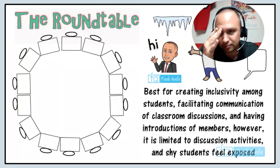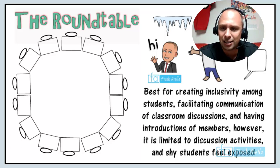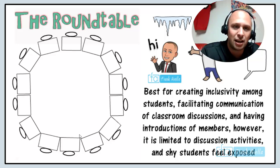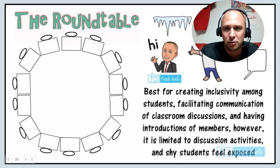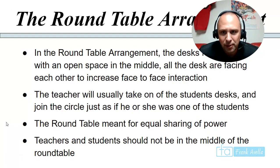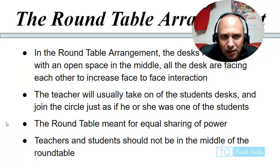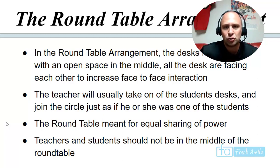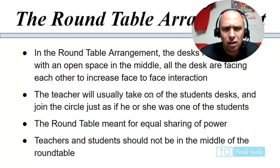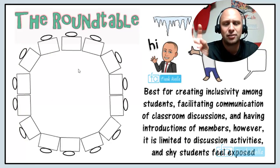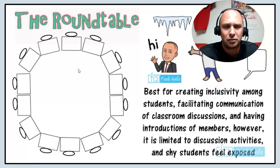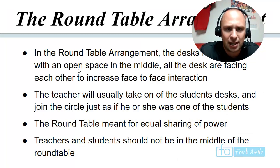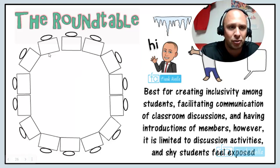Now we get to the round table — very fun. This is best for creating inclusivity among students, facilitating communication in classroom discussions, and introducing members. However, it's limited to discussion activities, and shy students can feel exposed because everybody is part of it. The desks form a circle with an open space in the middle, and all desks face each other to increase face-to-face interaction. The round table is meant for equal sharing of power — every student is equal, which is why it's a very inclusive seating arrangement. Teachers and students should not be placed in the middle of the round table; everybody stays equal.